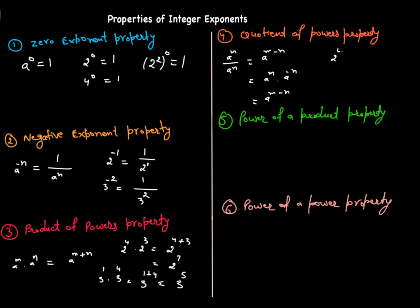For example, two raised to power four divided by two raised to power one equals two raised to power four times two raised to power negative one. When bringing the denominator to the numerator, change the sign of the power. So two raised to power one in the denominator becomes two raised to power negative one in the numerator. The answer is two raised to power four minus one, which is two raised to power three.